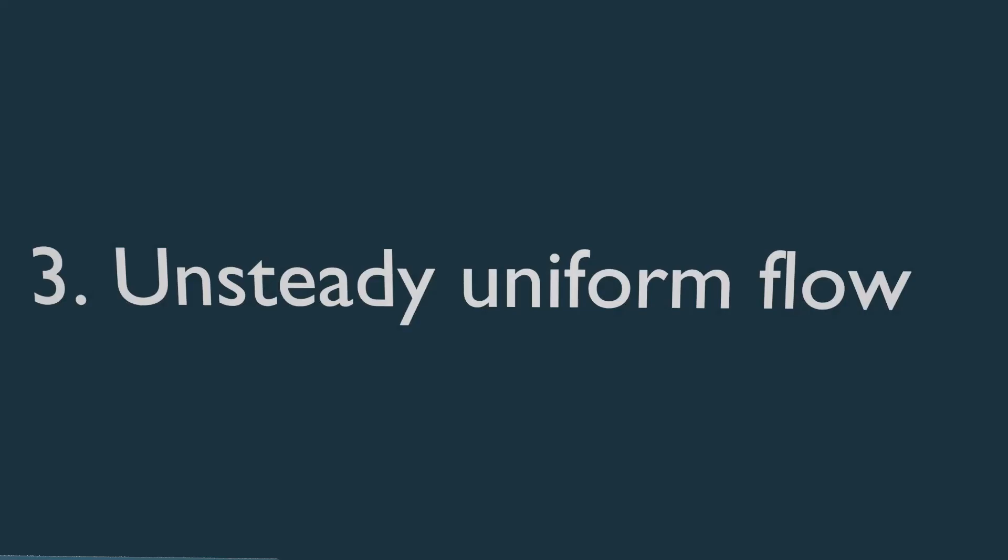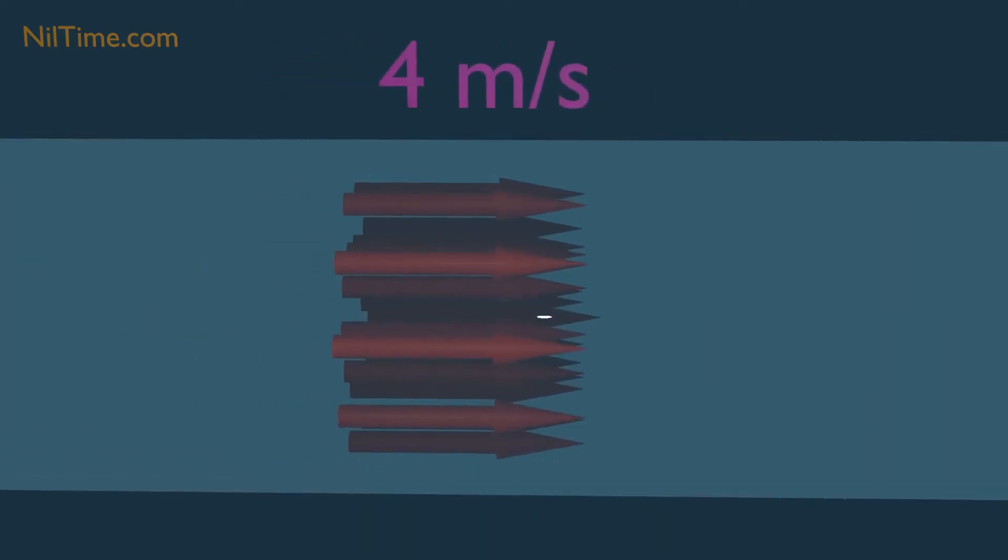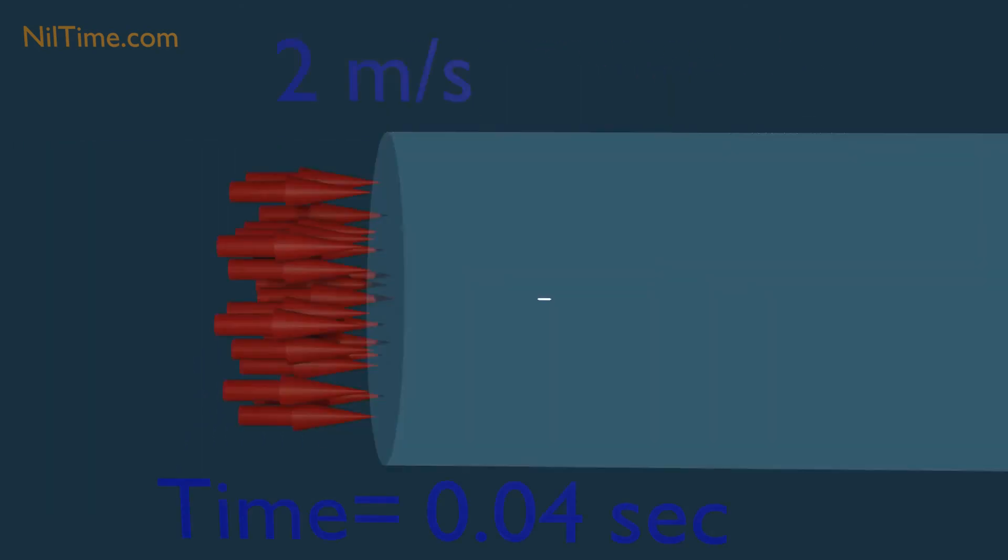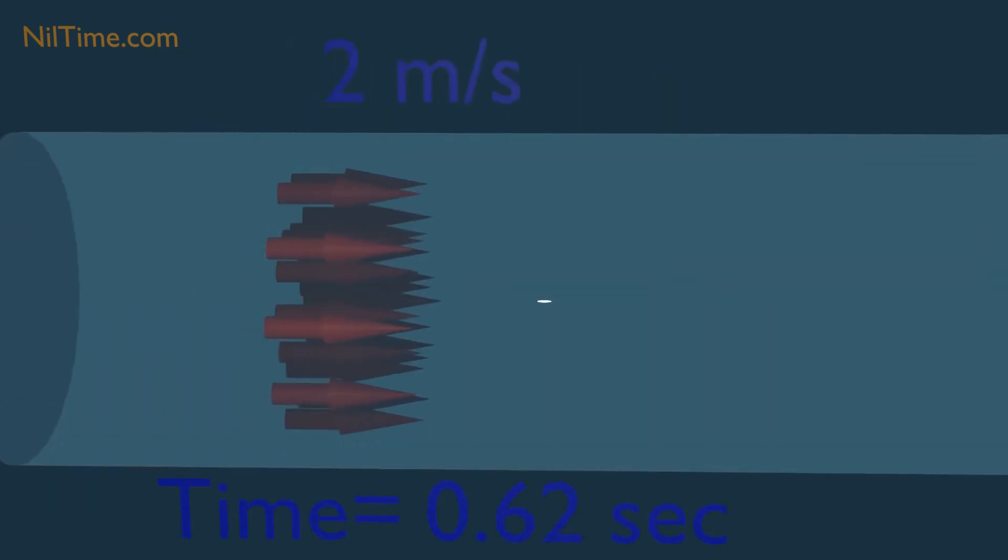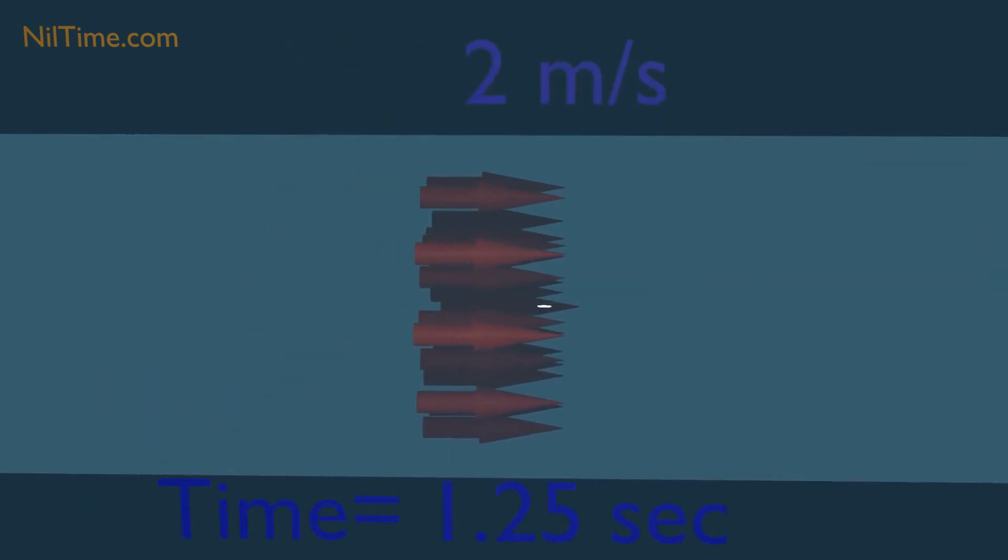Unsteady Uniform Flow. Notice the velocity of fluid is not constant in the same tube. From 0 to 2 seconds, it is flowing in and out with 2 meters per second.